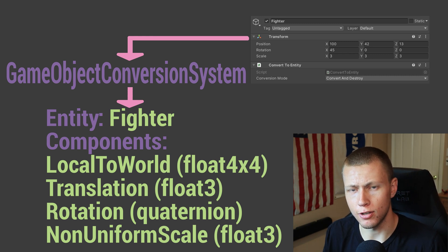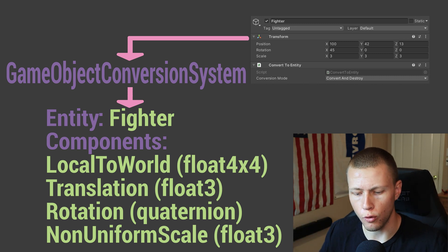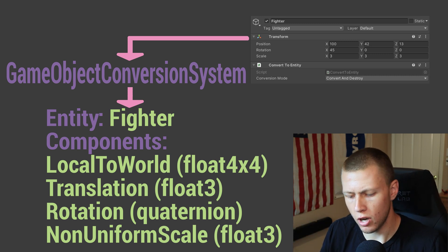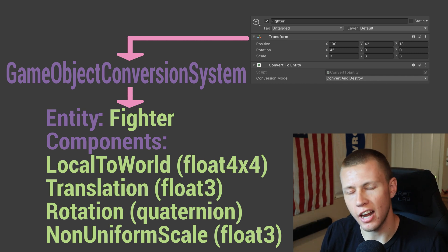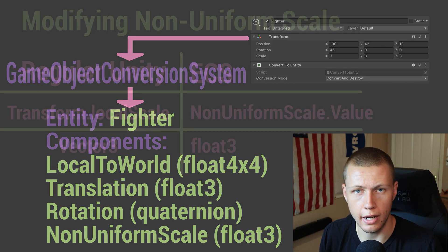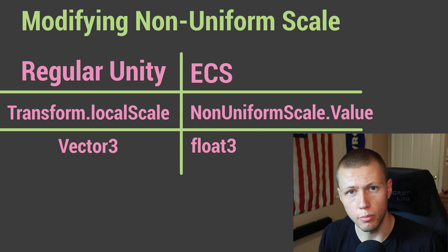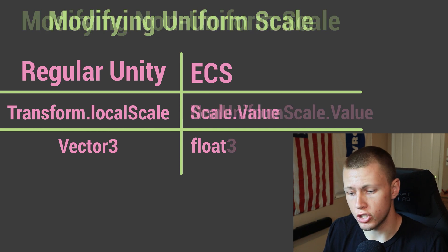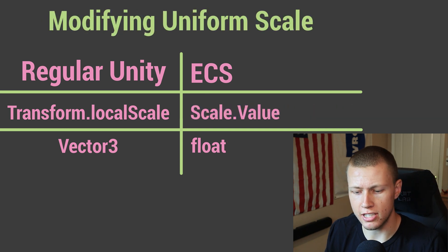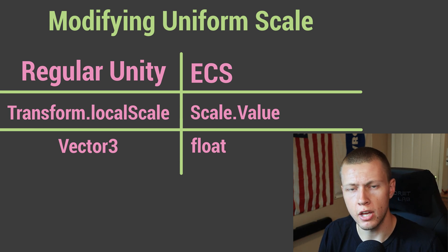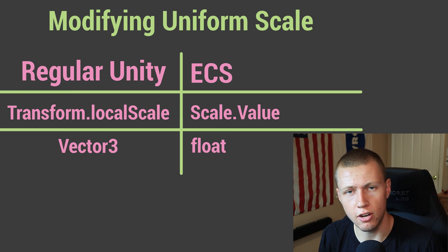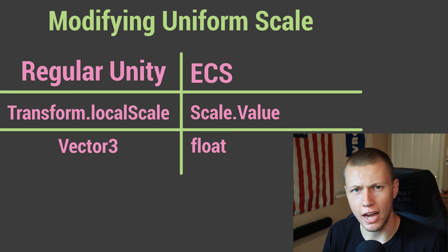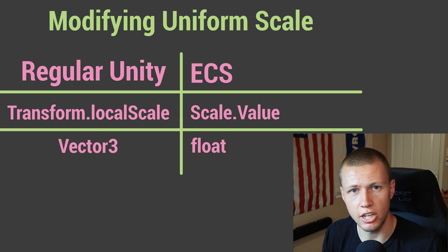Even if you have values like 3,3,3 which is technically a uniform scale, the conversion process still adds a NonUniformScale component. There are two scale components: NonUniformScale, and one simply called Scale which takes a single float value for uniform scaling. If you want to use the uniform Scale component you'll have to manually add it through code, which is as easy as adding any standard component to an entity.